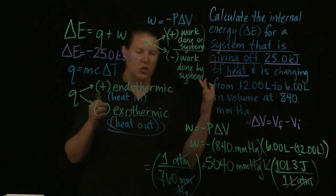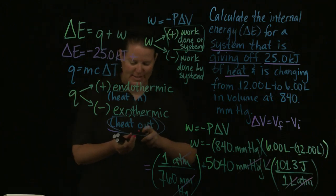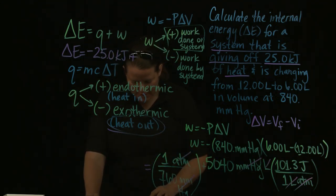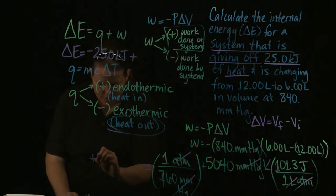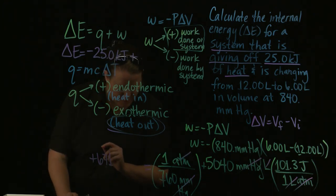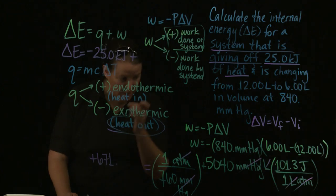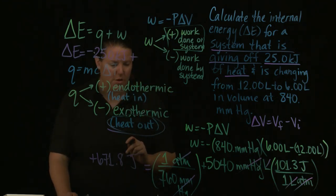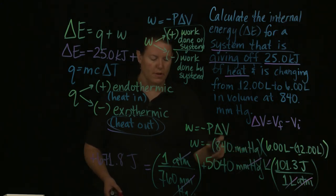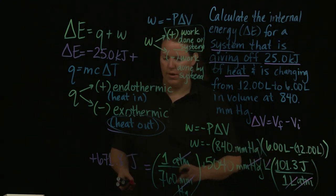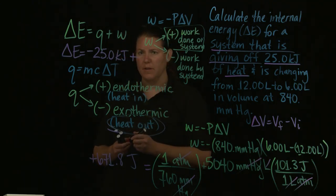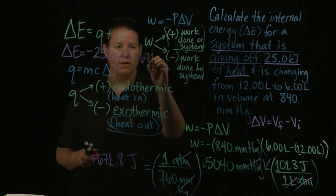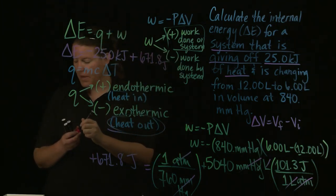I'm going to multiply this out: 101.3 divided by 760. I got a very cool number, like positive 671.8 joules. Notice I have a lot more significant digits here than I should—I should have three in my final answer. We're not rounding until the very end. The awesome piece here is that I could just add in my 671.8 joules. Well, that would be awesome, except that in order to add units, you have to add the same unit.